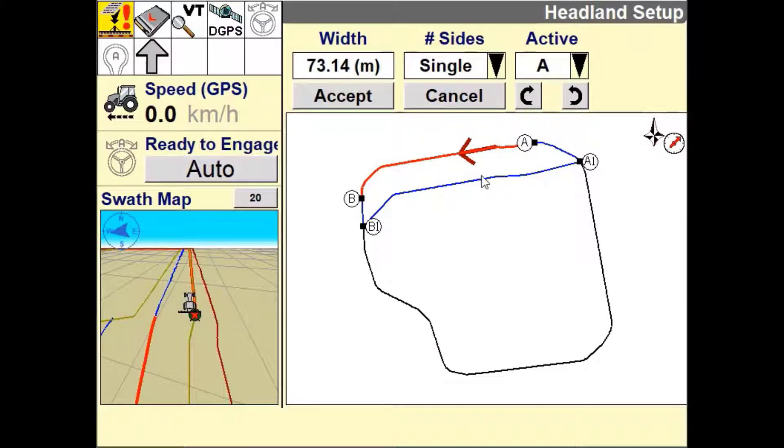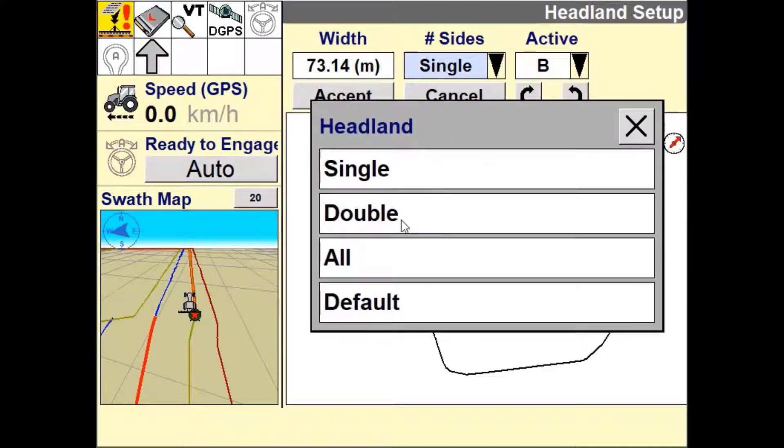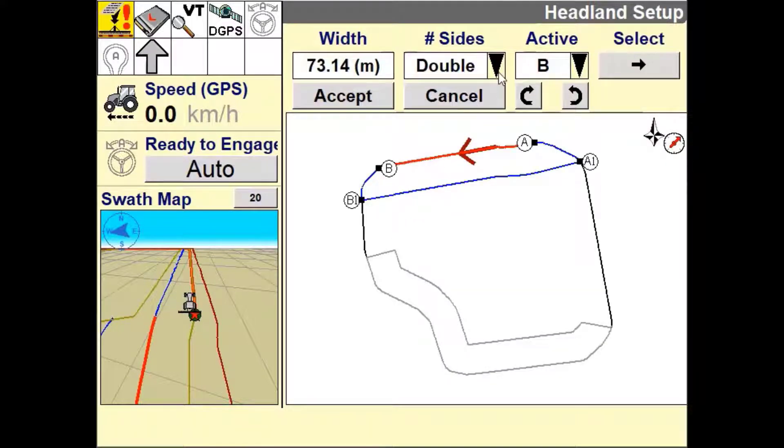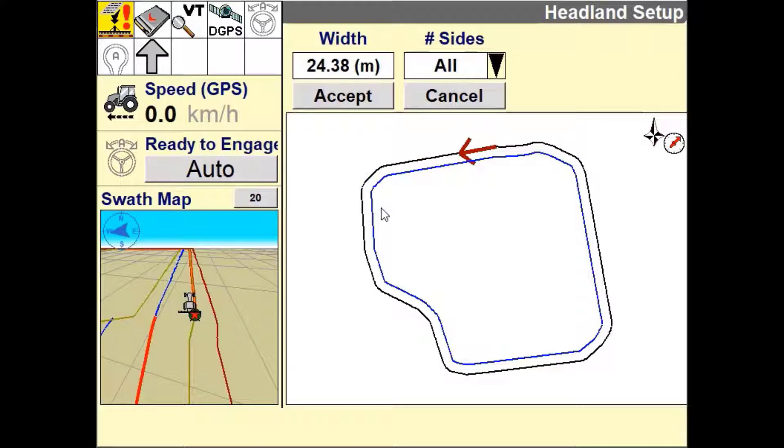The second option you have is to define what type of headland you require. Selecting single creates a headland at one end of the field. Selecting double allows you to create a headland for both ends of the field. Selecting all will create a headland for the entire way around the field.